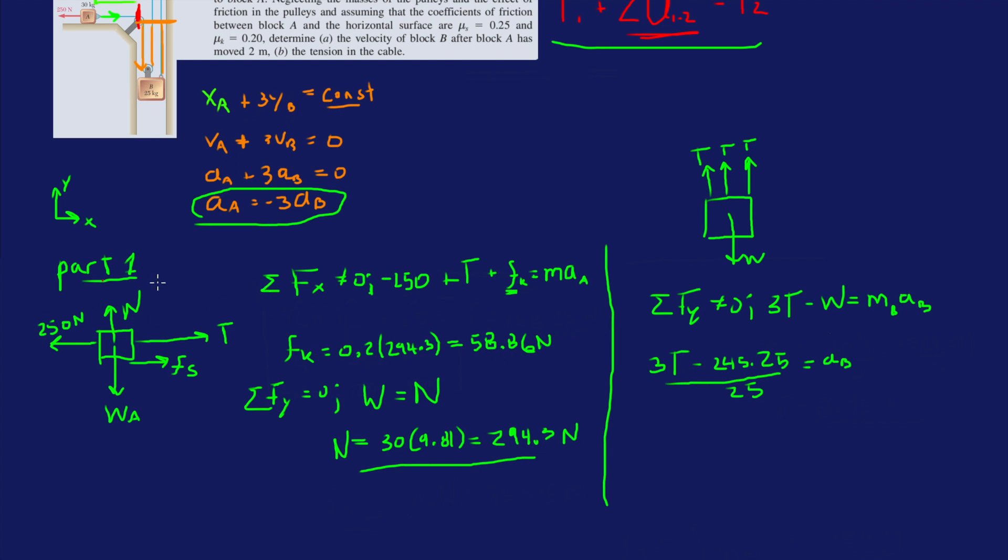And then we can rewrite our X equation, right here, the one in red over here that I highlighted. Let's write it down here. So it's going to be minus 250 plus T plus fk, which we said was 58.86, all divided by the mass of A, which is 30. And this is equal to AA.